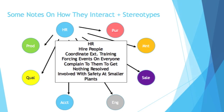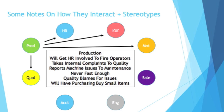Now I want to briefly talk about the eight main departments you'll see in a manufacturing facility, how they interact, and some stereotypes. Again, this is only a very brief overview and a lot of these stereotypes won't always be true where you work. First, HR. HR hires people for all the departments and coordinates external training if a department wants outside training. Stereotypically, people complain that HR always forces events on everyone — employee gatherings, things like that — and that complaints never get resolved. Non-stereotypically, at smaller plants you'll often see them involved with safety if there's no dedicated safety team.